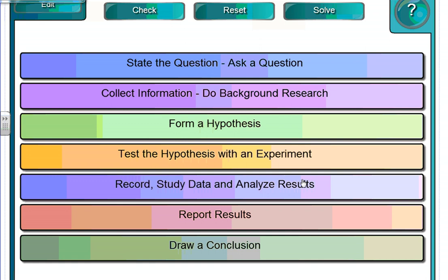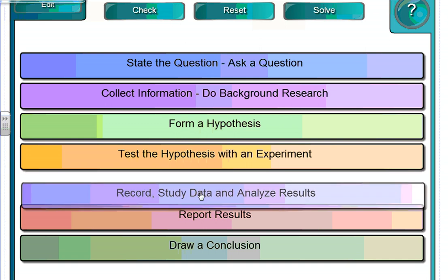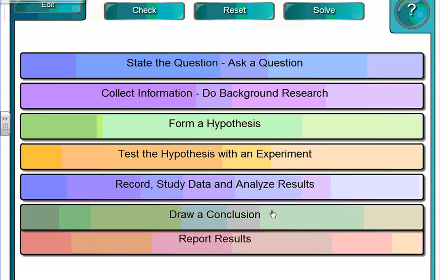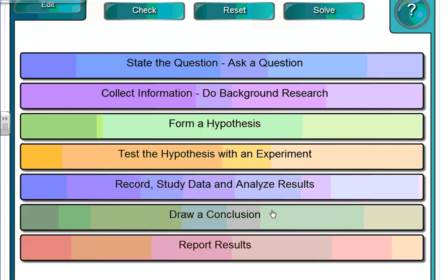Now moving on to the next step. After testing the hypothesis, we need to make sure during the experiment that we are also recording and studying the data. And then when the experiment's completely over, we can actually analyze it. So this one is already in its correct location. The next step would be, of course, after you've analyzed the data, you need to draw some type of conclusion. Figure out exactly what you can learn from your experiment.